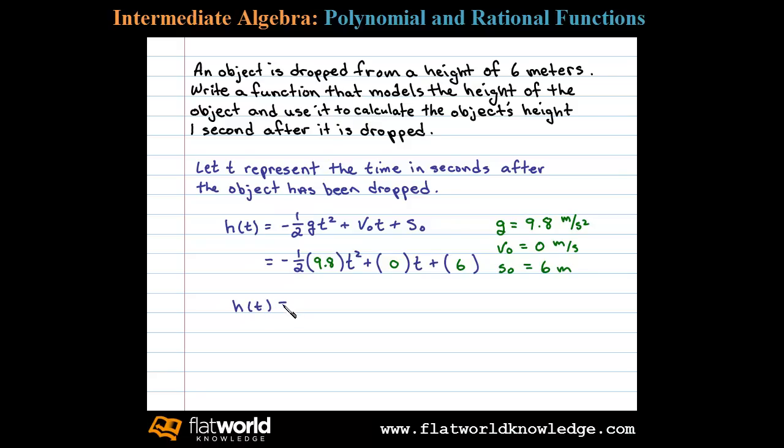h of t equals negative one-half times 9.8, which leaves us with negative 4.9 t squared, 0 times t is 0, and then plus 6.